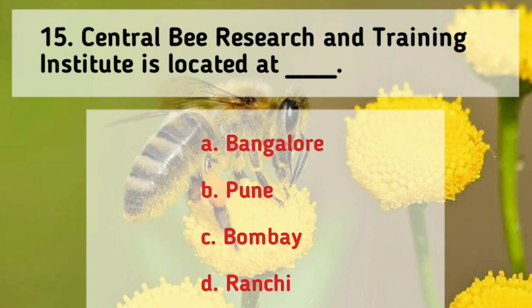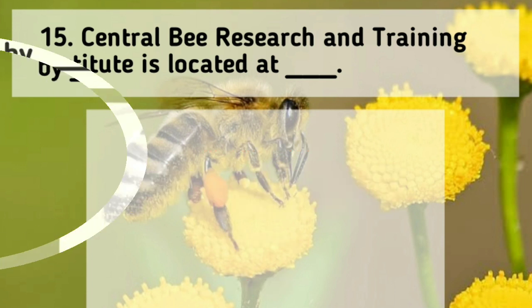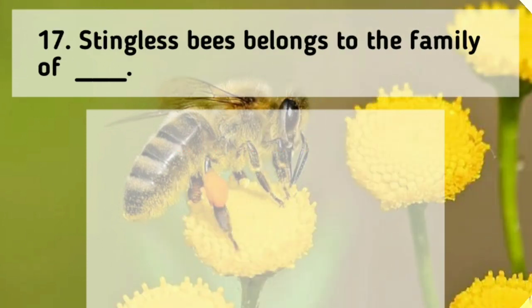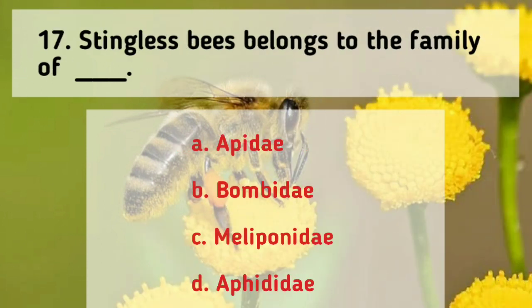A bee visits the same species of plant for pollen or nectar collection until exhausted — this is known as floral fidelity. The Central Bee Research and Training Institute is located at Pune. The moveable frame hive was discovered by L.L. Langstroth. Stingless bee belongs to the family Meliponidae.